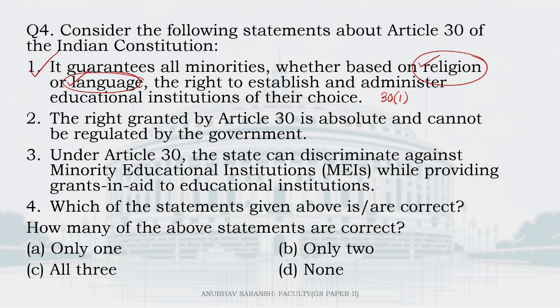Statement 2: the right granted by Article 30 is absolute and cannot be regulated by the government. We know very well that rights are never absolute in our country — they are always qualified in nature, subject to restrictions. Regulations by the government are allowed, particularly regarding educational standards and health and safety measures. You have a right to administer but not to maladminister an educational institution. So statement 2 is wrong.